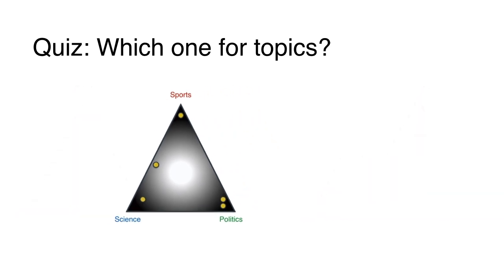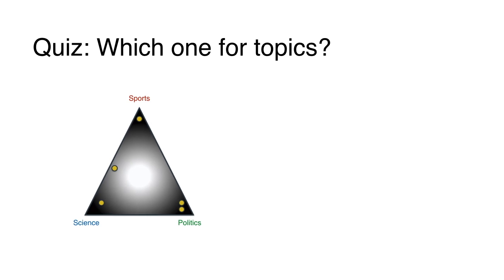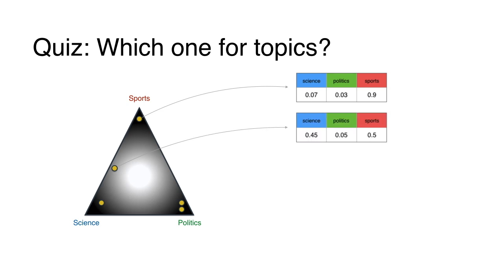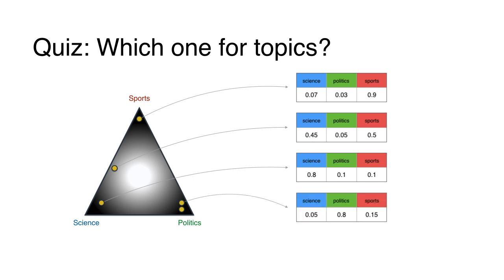Let's study this in a bit more detail. Each point is a percentage of sports, science, and politics based on how close it is to each corner. A point near the top might be 90% sports, 3% politics, and 7% science. One on the edge between sports and science might be 50% sports, 45% science, and 5% politics. A point near the politics corner would be mostly politics. Those percentages represent how much each point is of each topic based on its location inside the Dirichlet distribution.